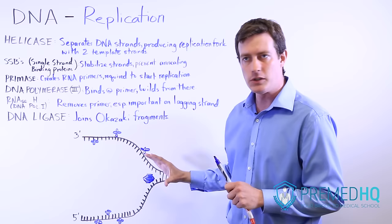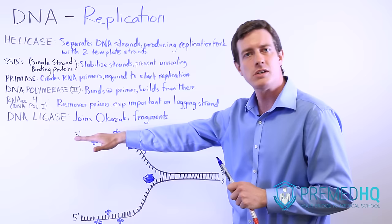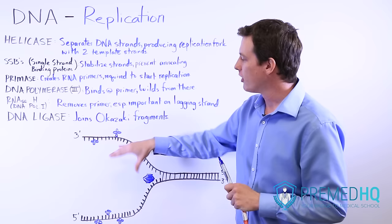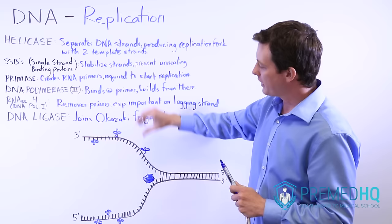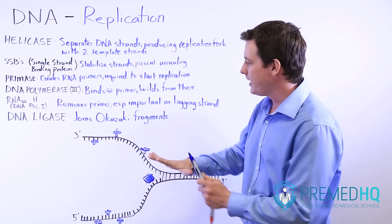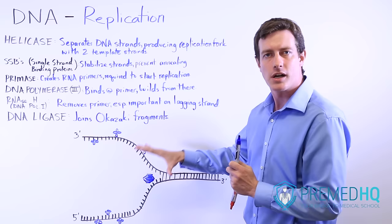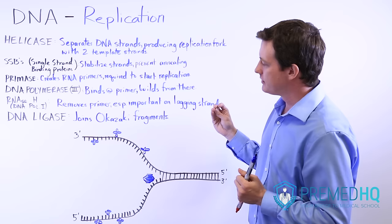SSBs bind to each single-stranded template component, preventing annealing and allowing the replication process to continue. As primase and polymerase come along, the SSBs will simply be displaced. These are necessary in the earlier stages to make sure the two strands don't come back together after being separated by helicase. So helicase separates the strands, and SSBs maintain them in separate components so they don't re-anneal.